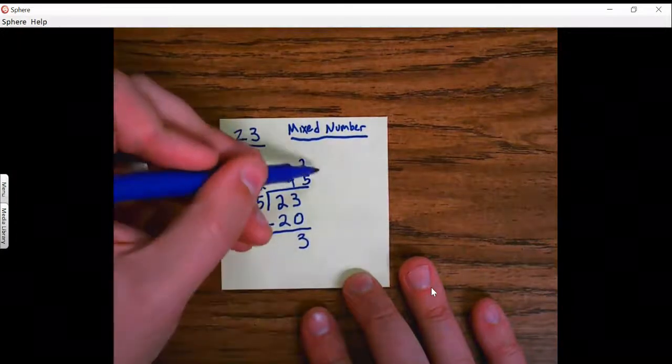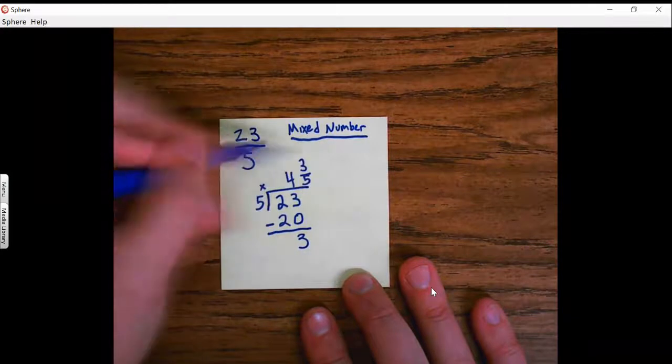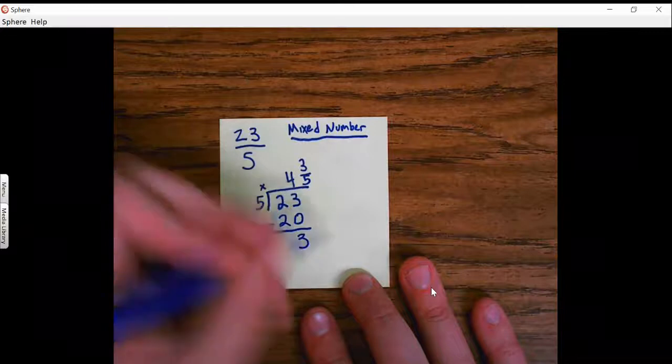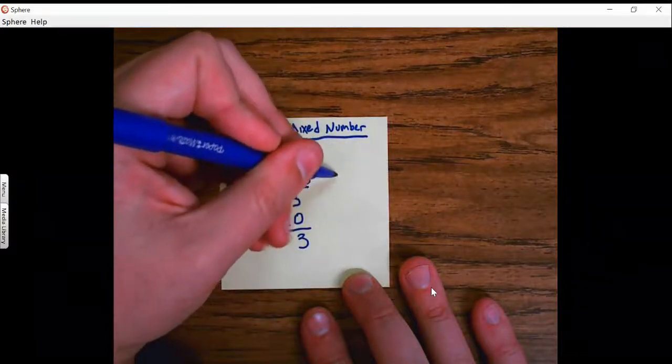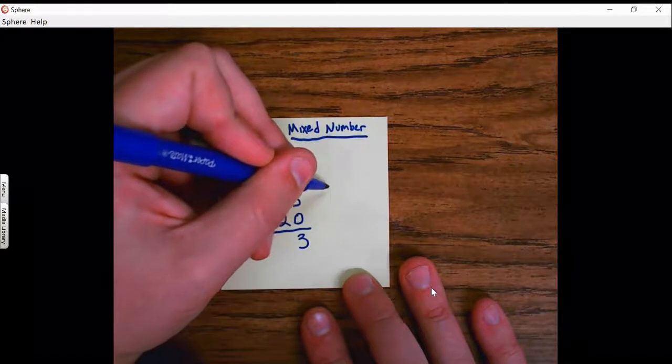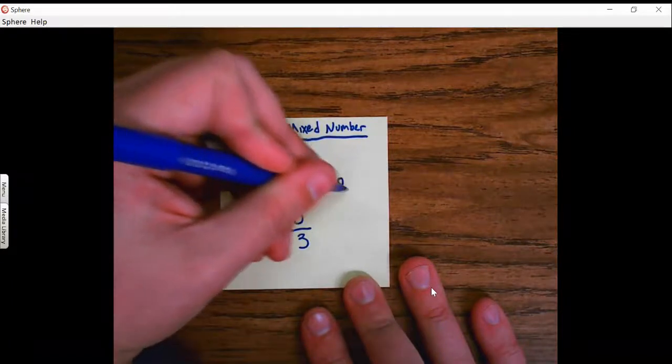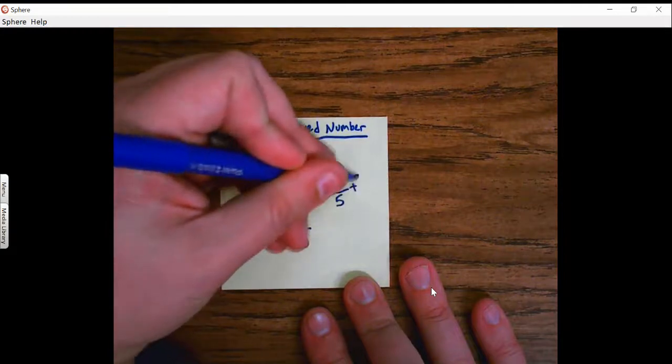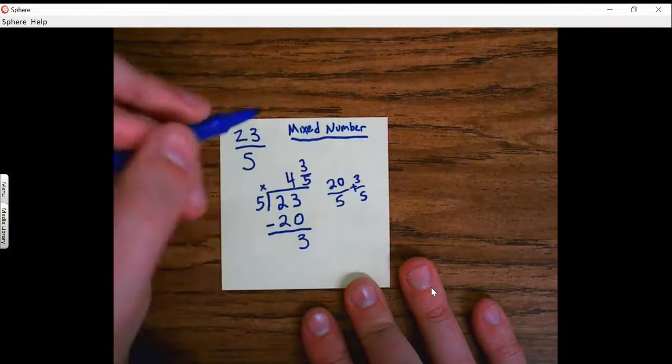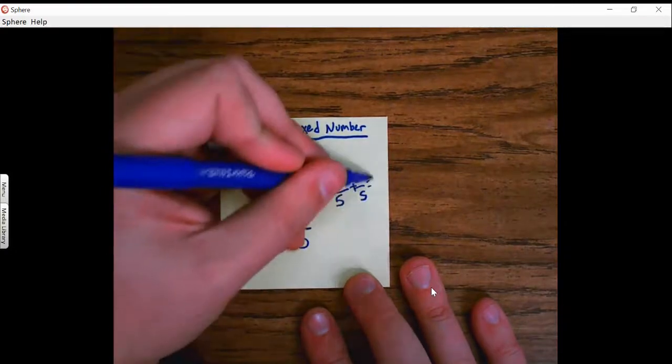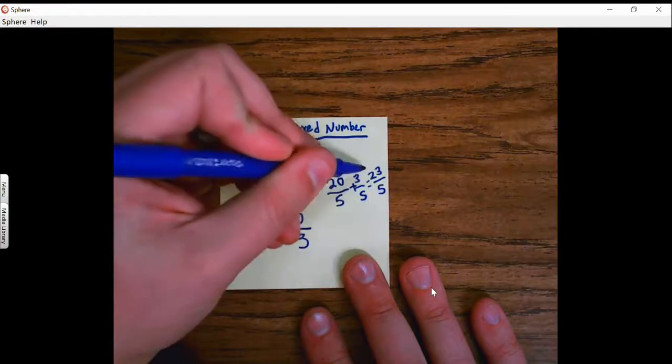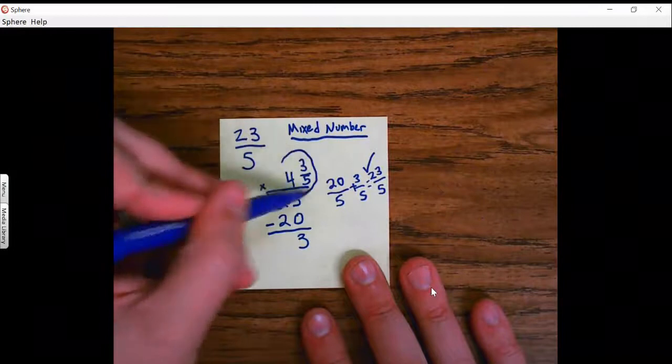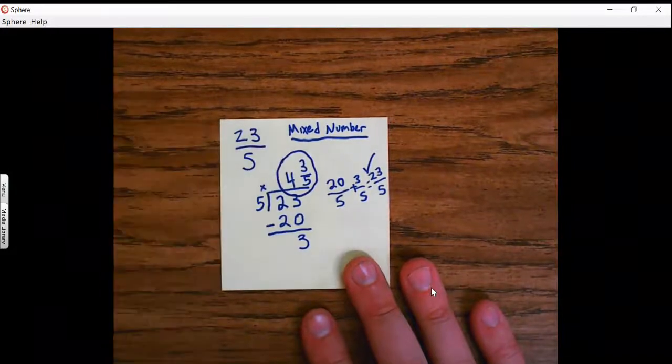We can do a quick check on this to make sure. My check would be doing 5 times 4, which would give me 20. So 4 wholes would be equal to 20 fifths, plus my 3 fifths there, gives me 23 fifths. That's back to the same. So my mixed number that I'm looking for is 4 and 3 fifths.